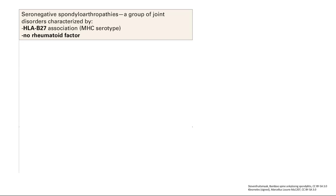Seronegative spondyloarthropathies is a group of joint disorders characterized by two things: an association with the HLA-B27 serotype, and the fact that there's no rheumatoid factor — that's why it's seronegative. Remember, HLA-B27 is very key here. There are a couple of conditions in this group.